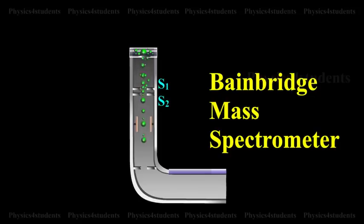This fine beam enters into a velocity selector. The velocity selector allows the ions of a particular velocity to come out of it by the combined action of an electric and a magnetic field.